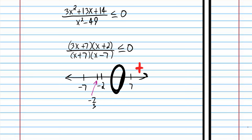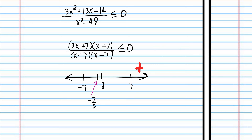Let's try plugging in negative 2.1, because negative seven thirds is negative 2.333. Plug in negative 2.1: we get negative 6.3 plus 7, which is positive. Plug it into the other factor in the numerator, we get a negative. In the denominator, negative 2.1 gives a positive times a negative, so we have a negative divided by a negative, which is positive. Let's plug in negative five to test another region: we get a negative times a negative divided by a positive times a negative, which is a positive divided by a negative — negative.